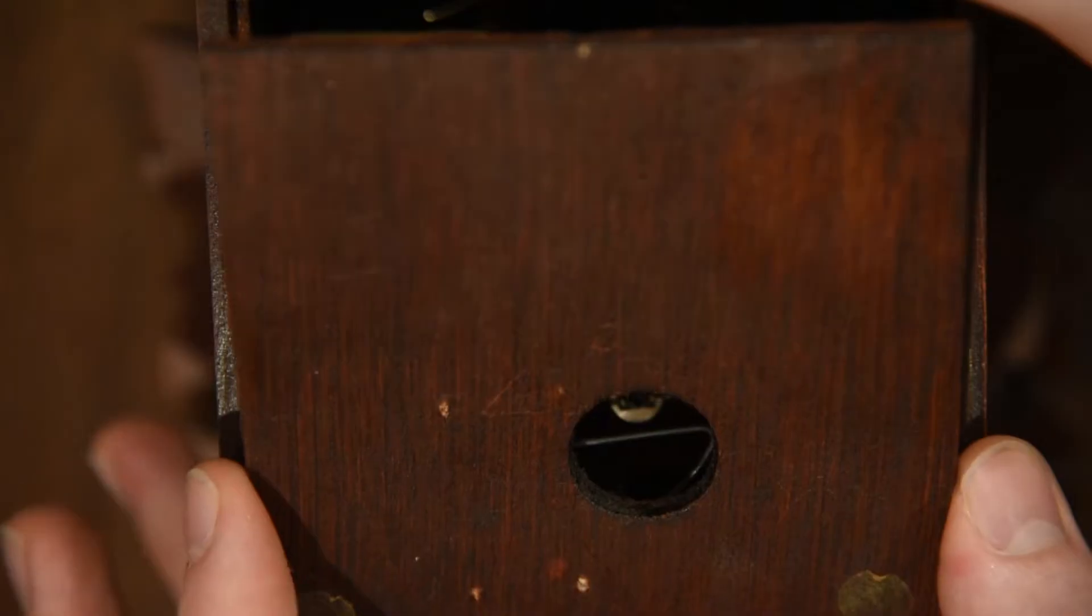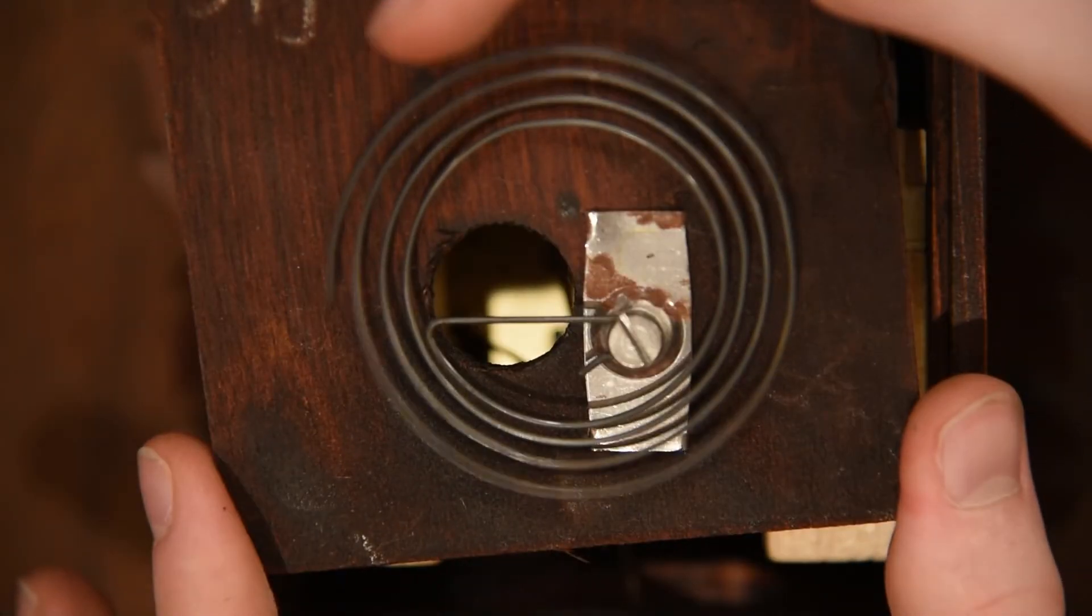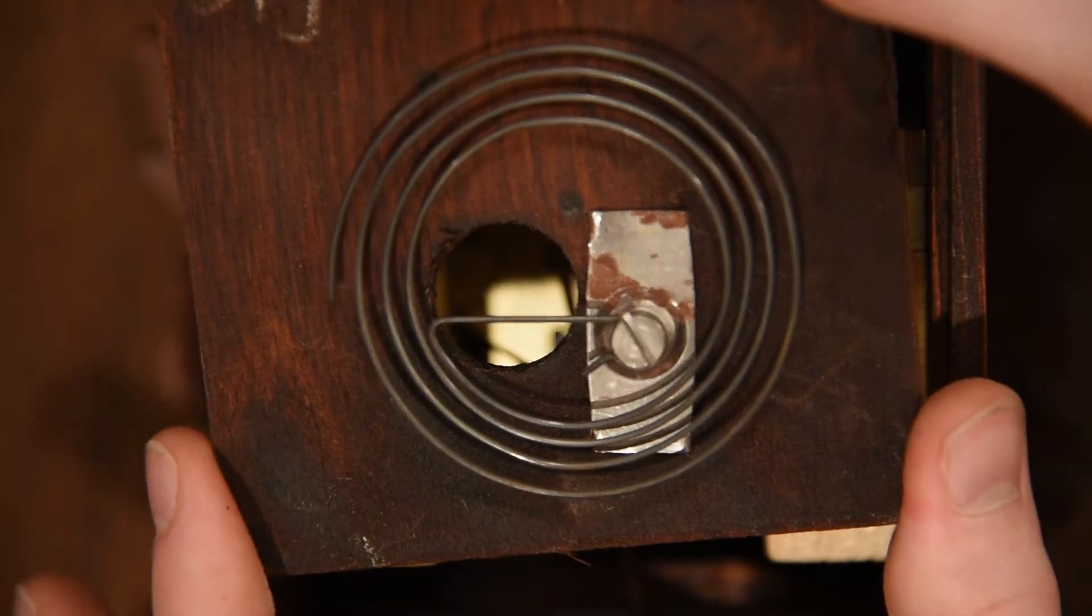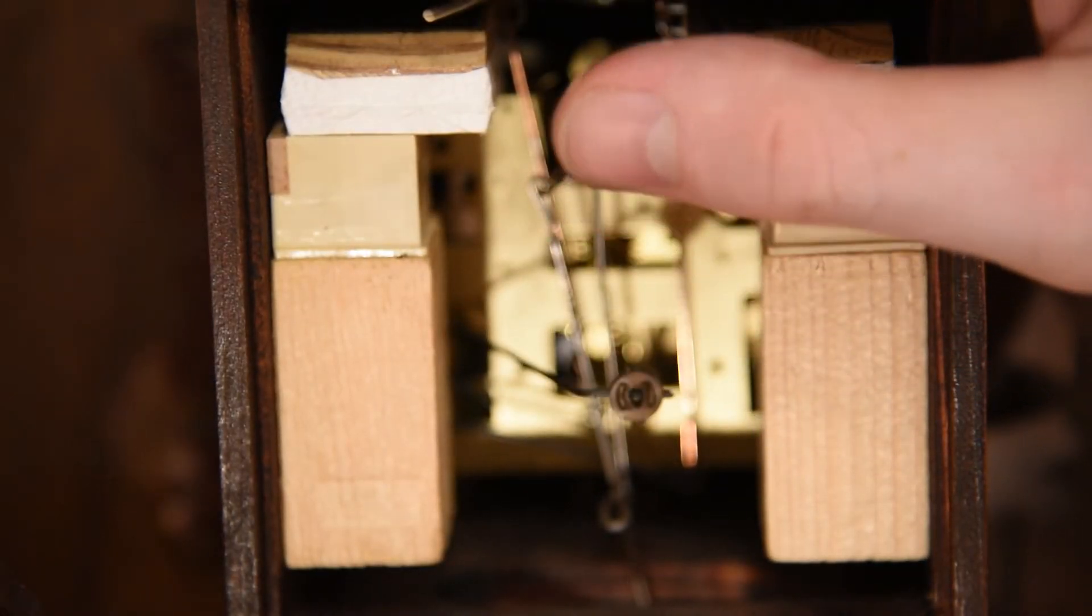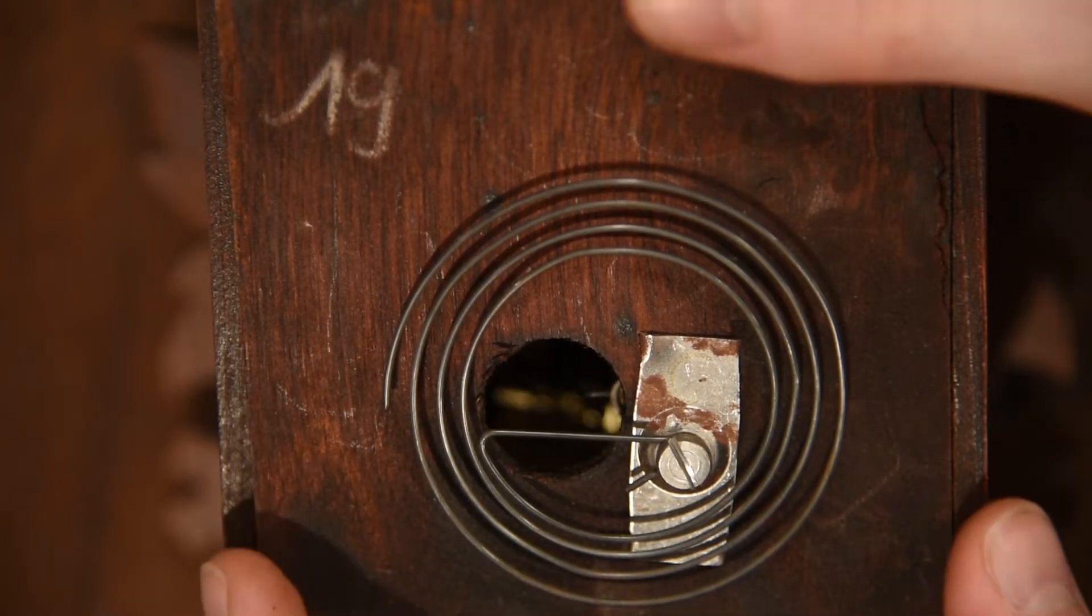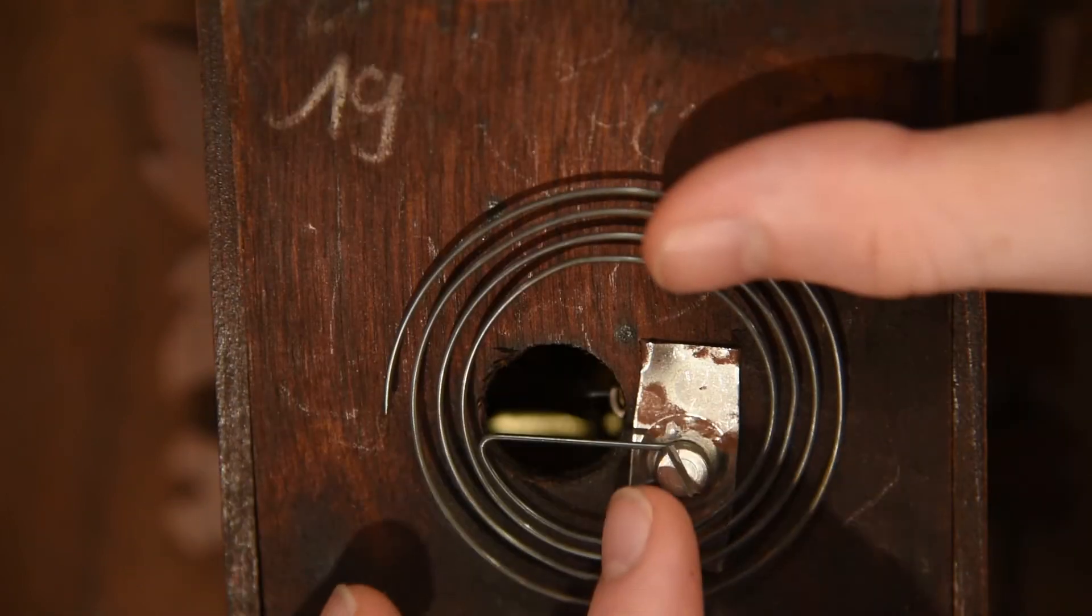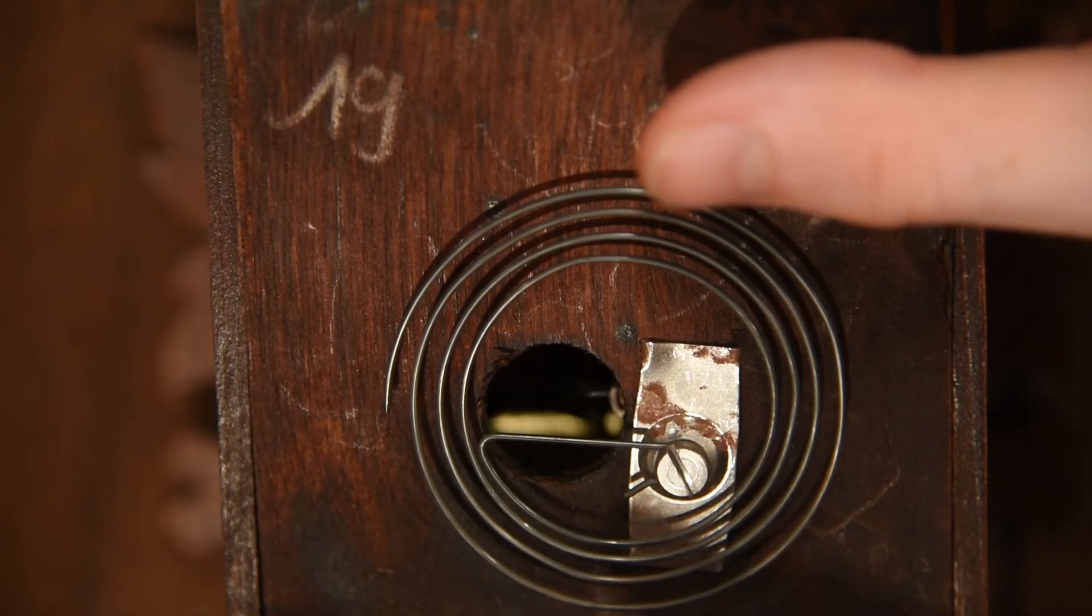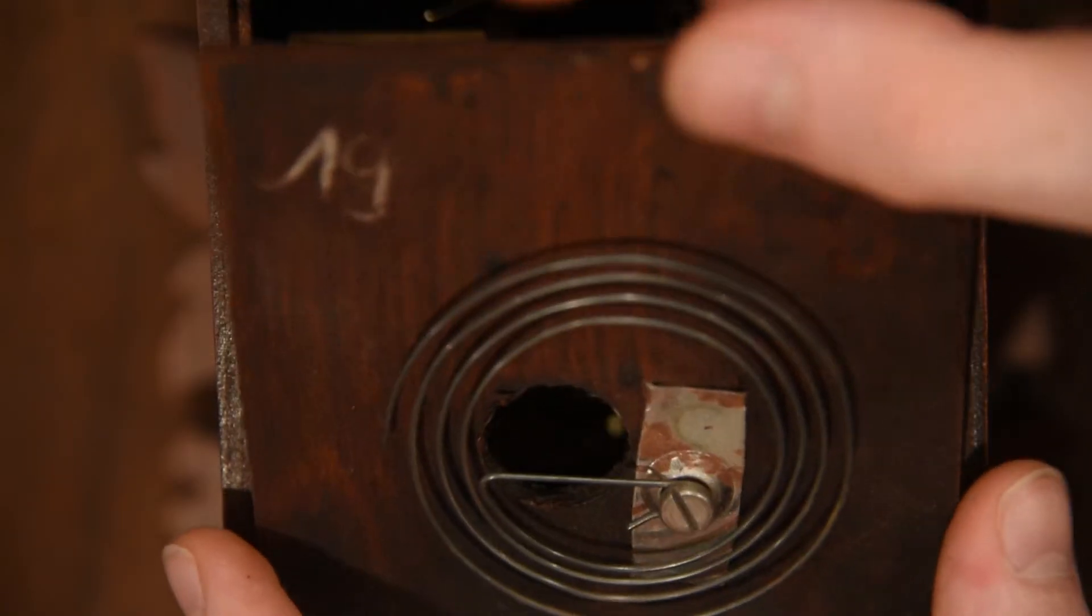You can see that the back lifts off to reveal this gong. This is a gong that is sounded when this hammer falls, and this is sounded for every strike of the hour. Not all cuckoo clocks have this, but most do. So with the cuckoo sound, it'll go bong cuckoo, bong cuckoo, bong cuckoo, for however many hours there are.